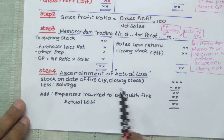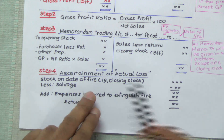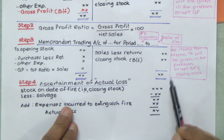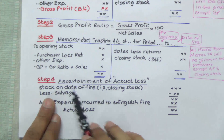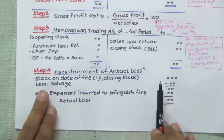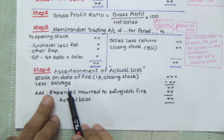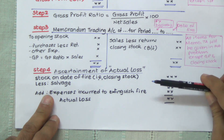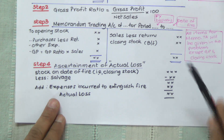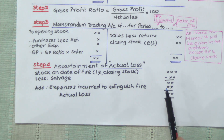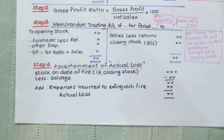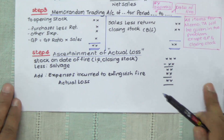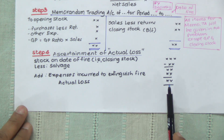Step four is to ascertain the actual loss. We take the stock on date of fire — that's the closing stock arrived in the previous step — and deduct salvage. Salvage means stock saved; so of the total stock we had, we save some stock, and the balance stock is what is lost. Plus, we could have incurred some expenses to extinguish the fire, and those add up to the cost. We then have a total actual loss in terms of rupees.